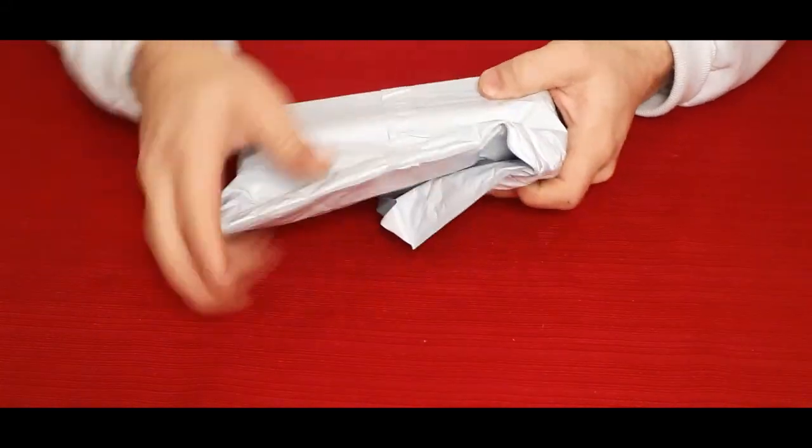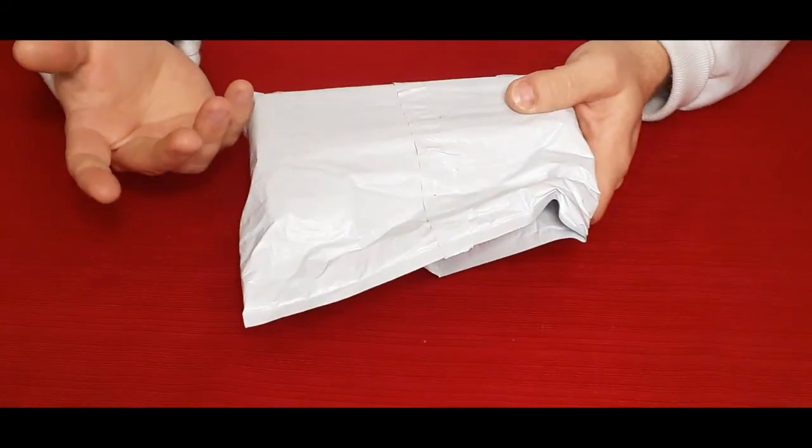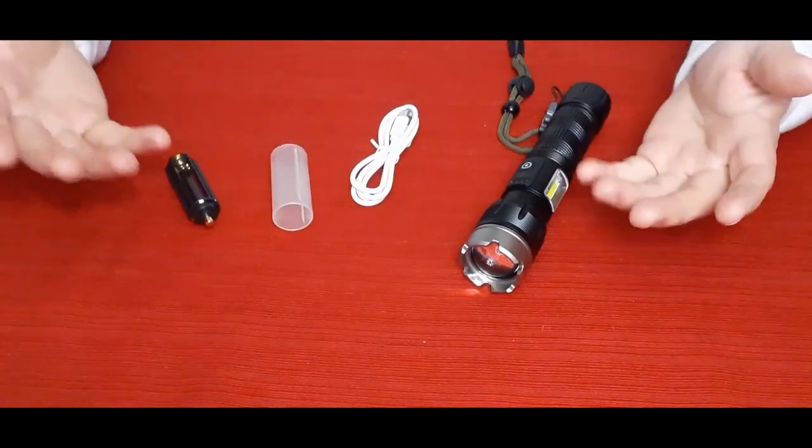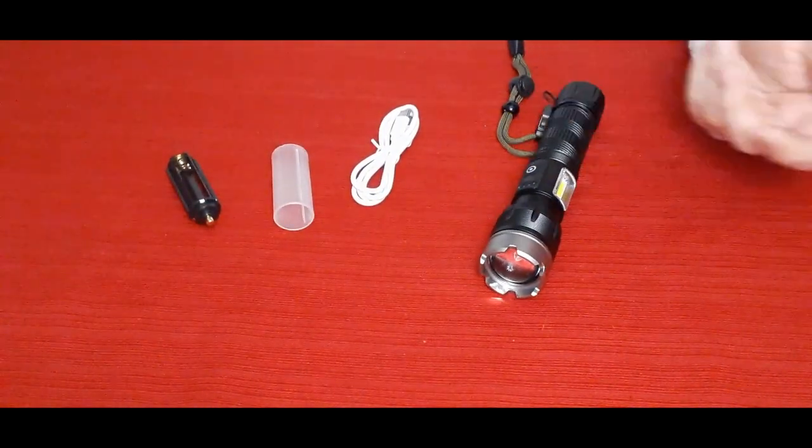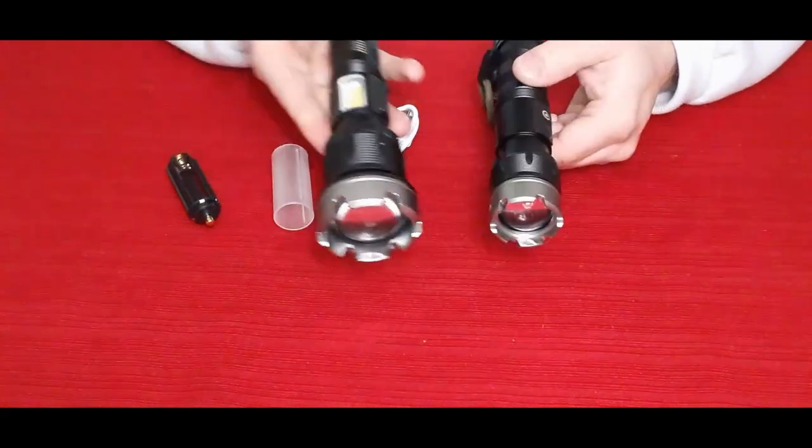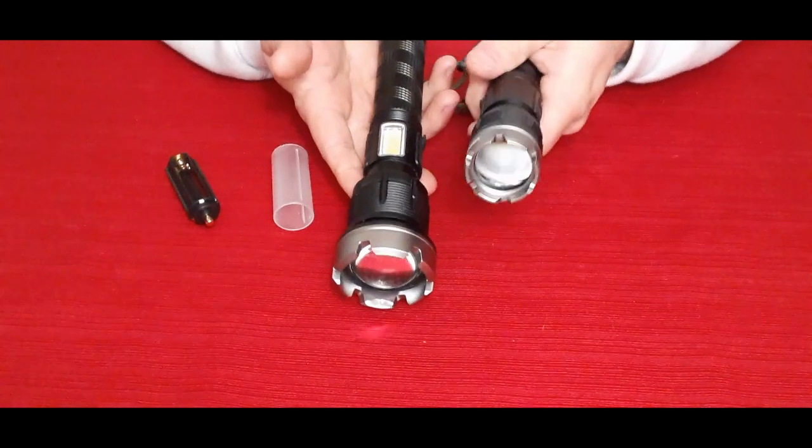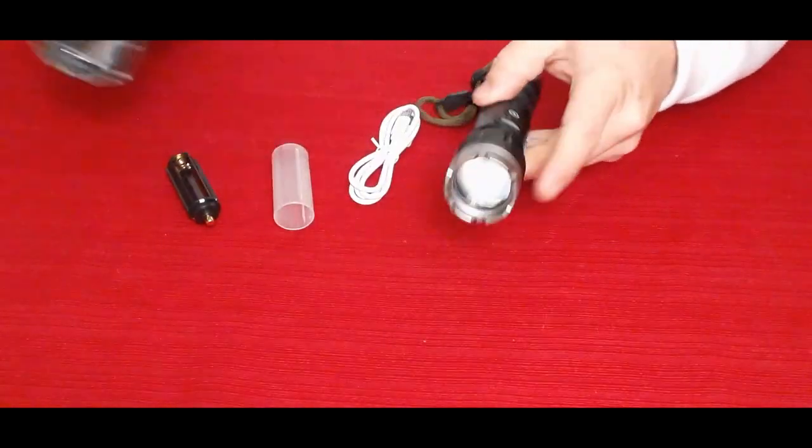As you can see, it's just a regular package. We'll go ahead and rip into it here and see what's inside. And there we go, that's what we've got. So we basically have the little brother to the large one. Basically the same kind of flashlight, almost the same size around, much shorter obviously, and a smaller head there.